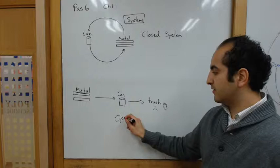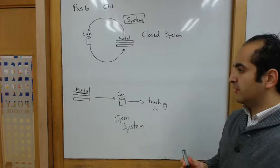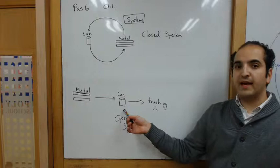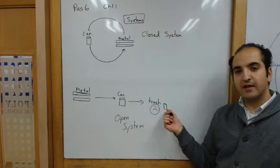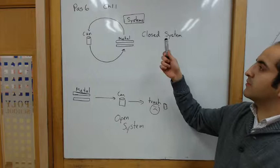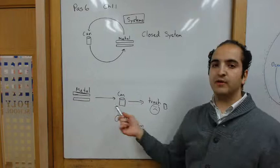However, this is called an open system. This is the opposite. An open system, using the same example, is metal. Then you make it into a can. Then you throw the can into the trash pan. And here's a sad face because then you cannot use that can again. So that's the difference between an open system and a closed system. The closed system is like a cycle. It keeps going over and over again. The open system goes once and it finishes.